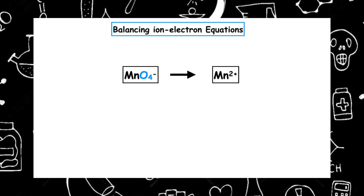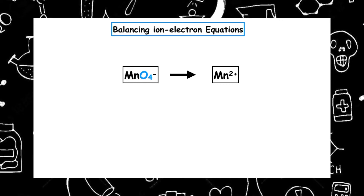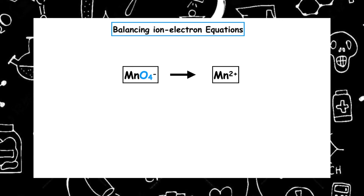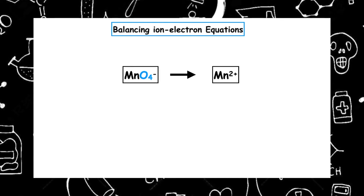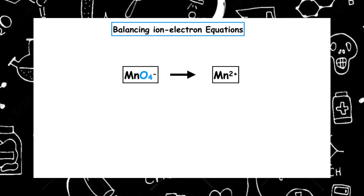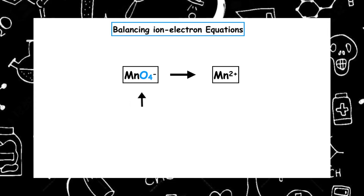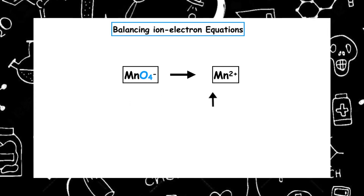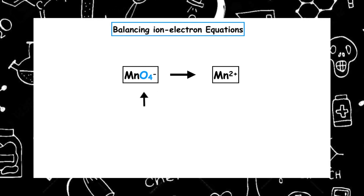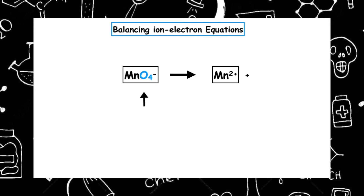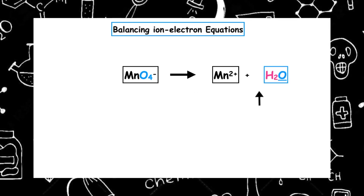If you want to have a go at this, you can pause the video and then press resume to go through the answer together and check your working. We've got MnO4⁻ on the left changing to Mn²⁺. The first thing we have to do is check that elements that are not oxygen or hydrogen are balanced. We've got four oxygens on the permanganate on the left-hand side, so we're going to have to add water to the right-hand side to balance it out.